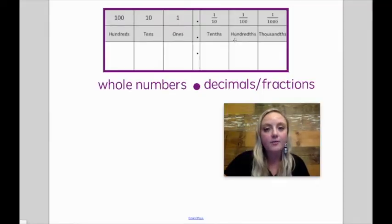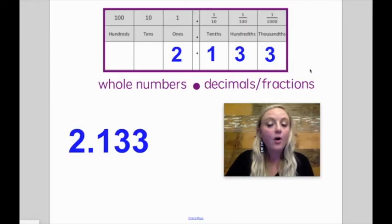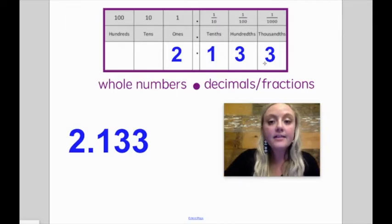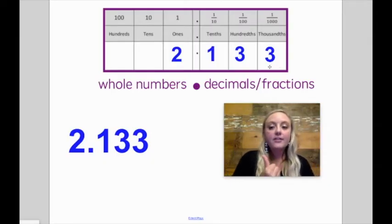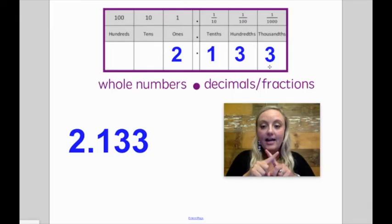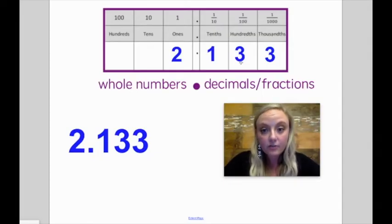So let's look at an example of a number in a place value chart. Here we have the number two and one hundred thirty-three thousandths. To the right of the decimal point, these digits are less than one whole, and this is two whole numbers — two ones. These threes are the same digit, but they are not the same value. Remember, in our number system and on the place value chart, every time we go to the left, it increases by times ten. That means the hundredths spot is ten times the value of the thousandths spot — this three is ten times the value of this three.